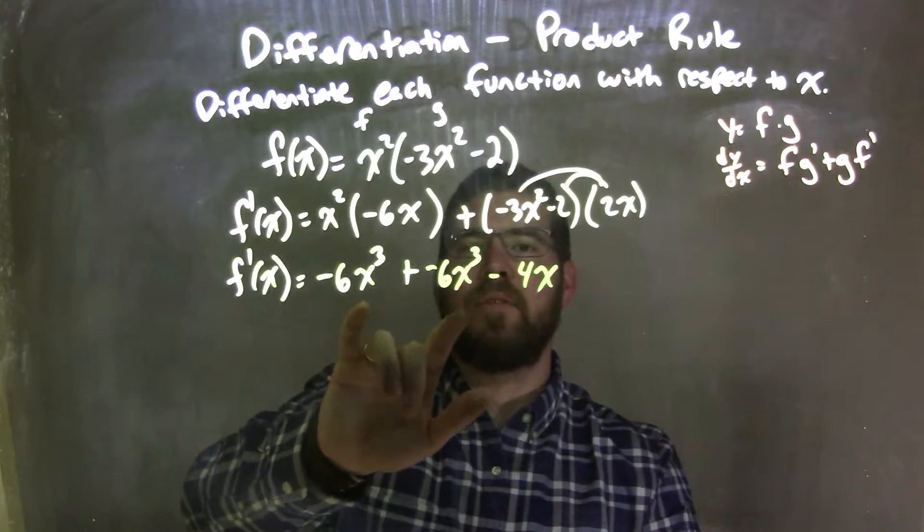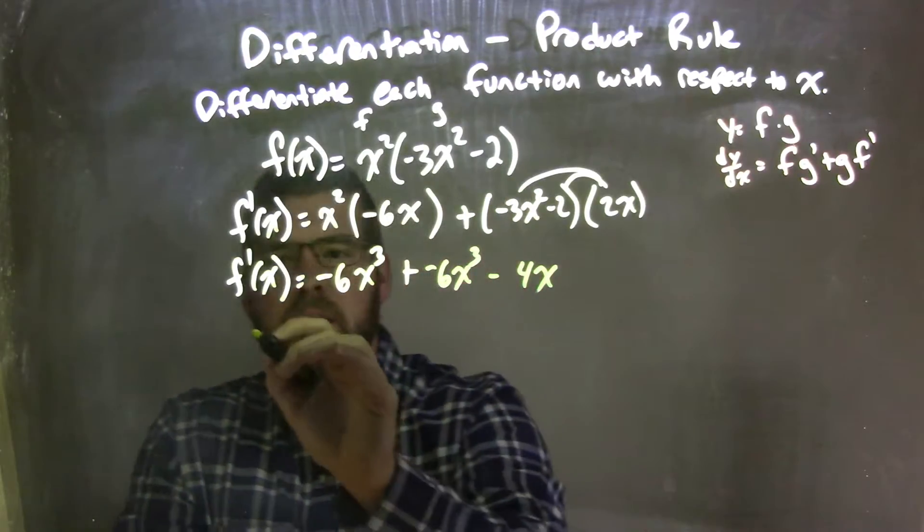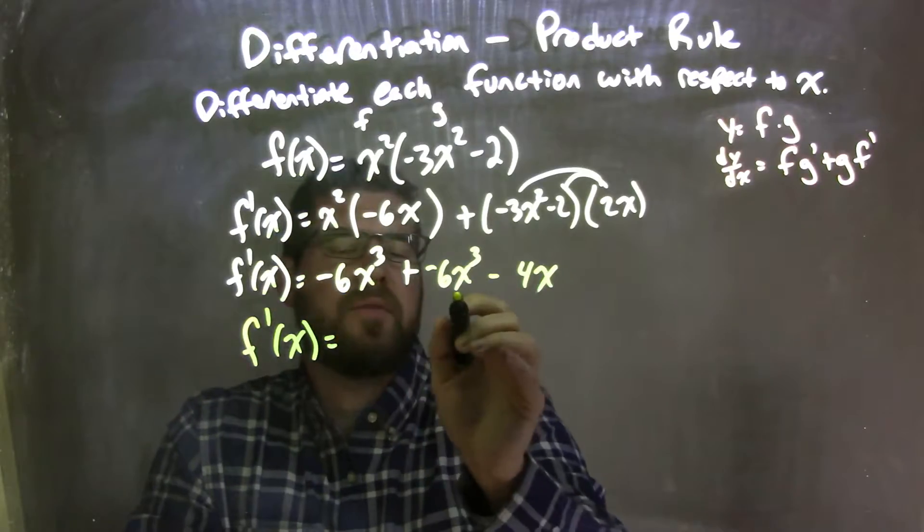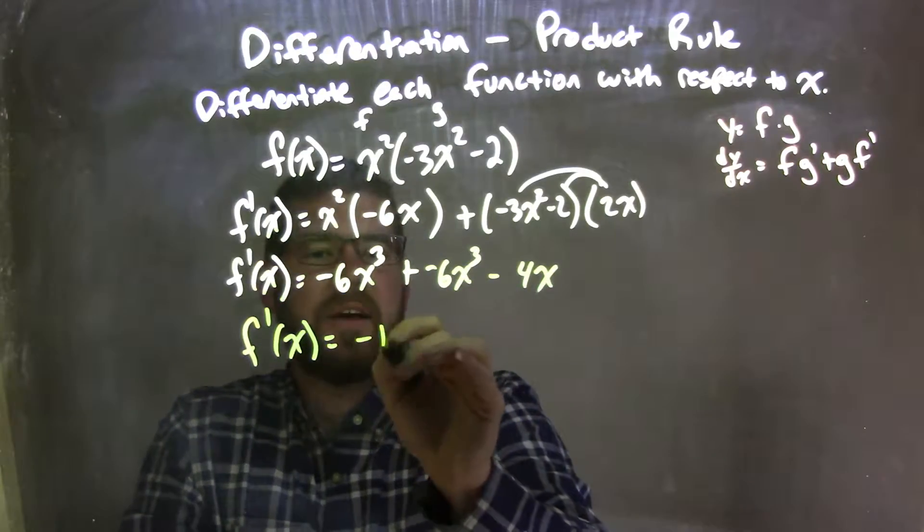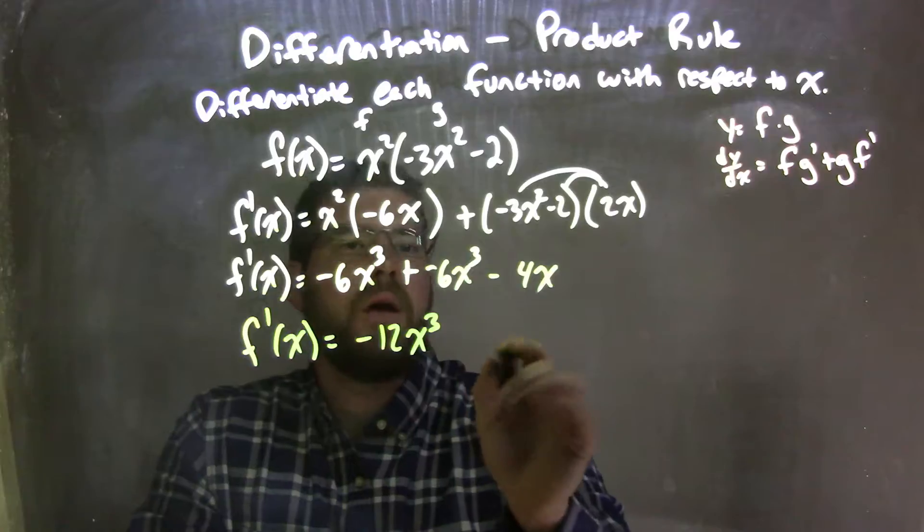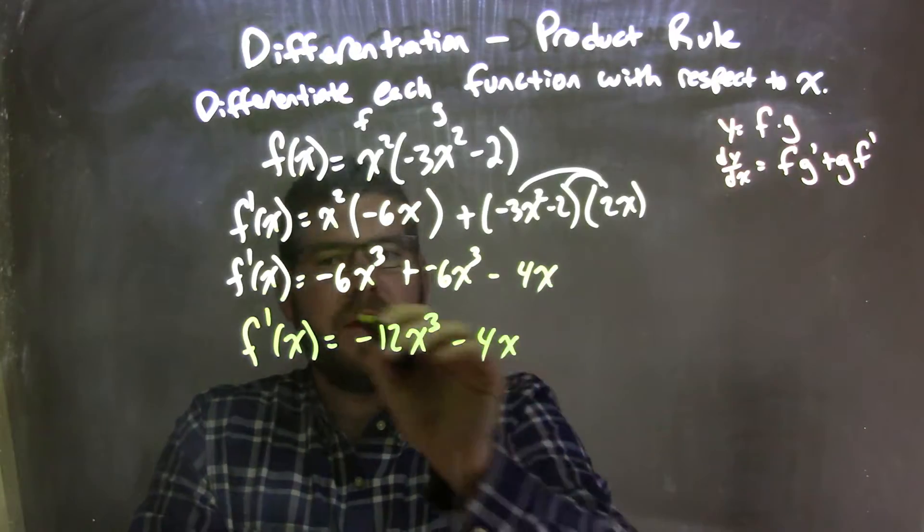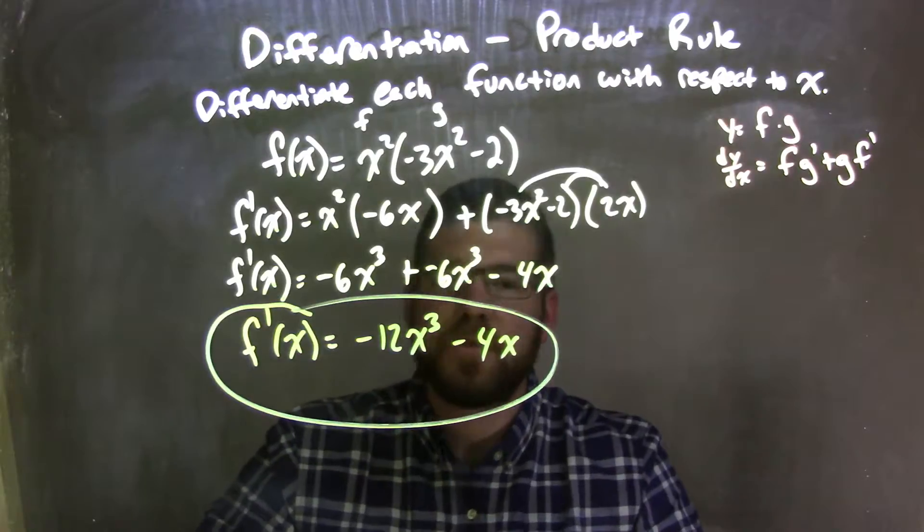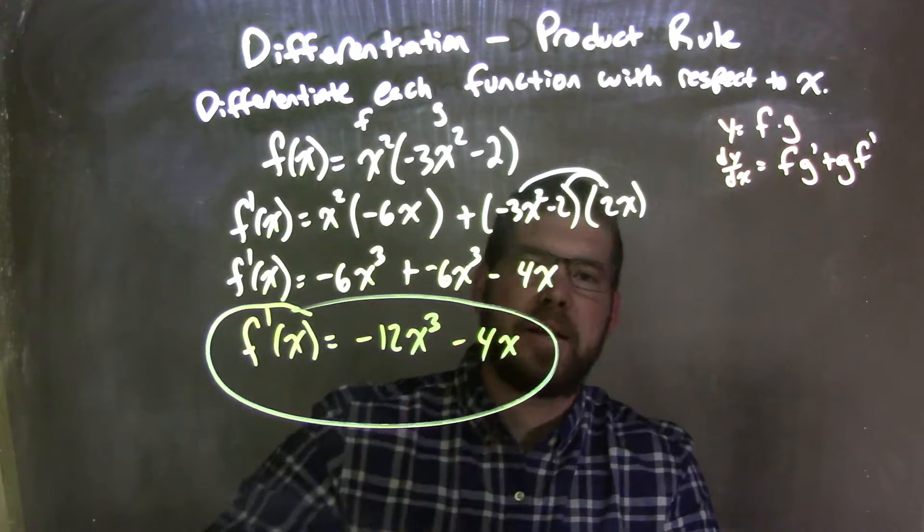Let's combine the like terms, we have the same exponent, same degree there. f prime of x is equal to negative 6x to the third, plus negative 6x to the third, is negative 12x to the third, minus 4x at the end, and there we have it, we have our derivative. f prime of x is equal to negative 12x to the third minus 4x.